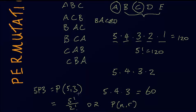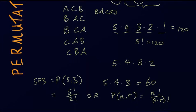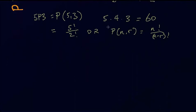where n in this case would be 5, r is 3, is equal to n factorial divided by n minus r factorial. So this is the general formula for doing permutations.